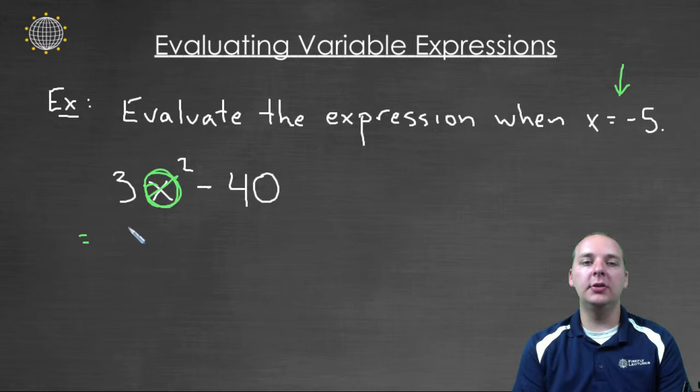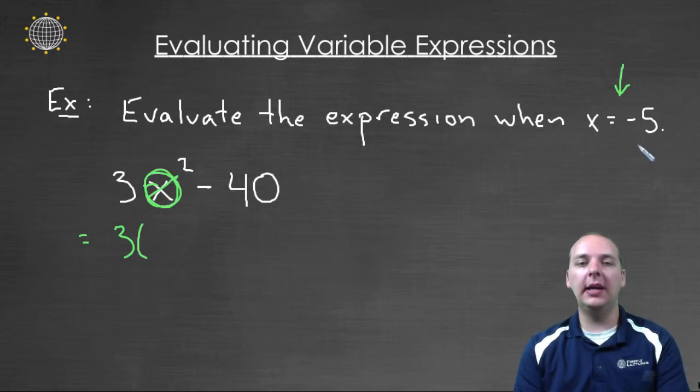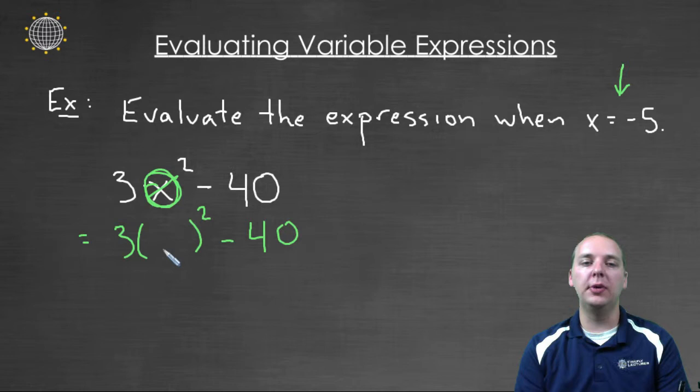So here what I usually do is if I'm evaluating an expression then I'll rewrite the expression but anywhere that I had a variable before I start plugging anything in I'm going to leave a blank. So 3 blank squared minus 40 because this used to be 3x squared minus 40. Everywhere that you had a variable we're just going to pluck it out and leave parentheses here.